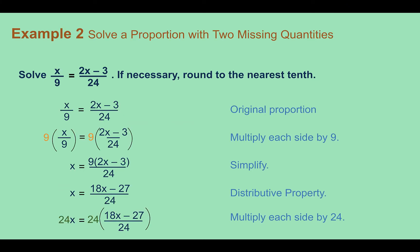Example 2. Solve a proportion with two missing quantities. So we can see there's a variable there and a variable there. The process is going to be the same, except we're going to end up needing to multiply by both denominators at different steps.